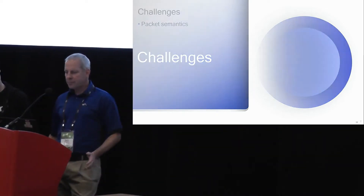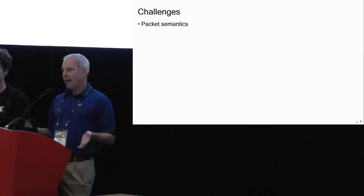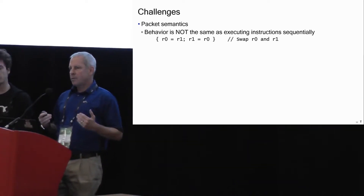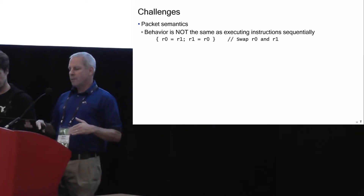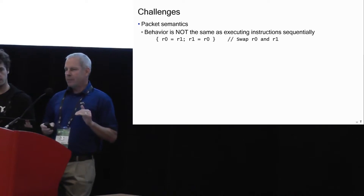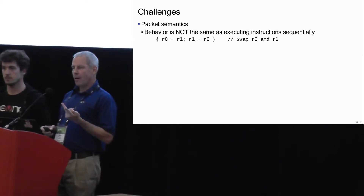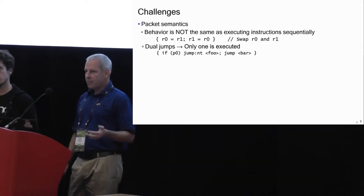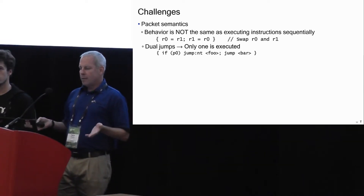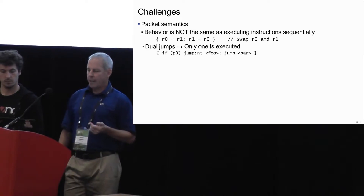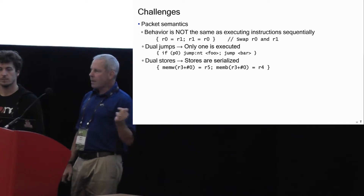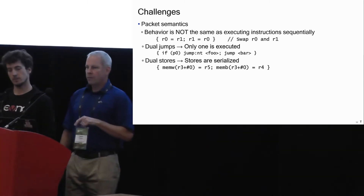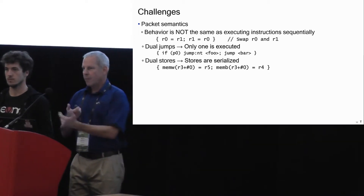Why is this hard? The first set of reasons comes from the semantics of the packet or VLIW. The semantics are not the same as executing instructions serially — at the beginning you do all reads, then all operations, then all writes. So a packet that swaps R0 and R1 does not produce the same result as serial execution. You can have more than one jump in a packet, but only one will execute. You can have more than one store, and those must be serialized since they can point to the same place — for example, a word store at the same address as a byte store requires the word first, then the byte overwrites it.